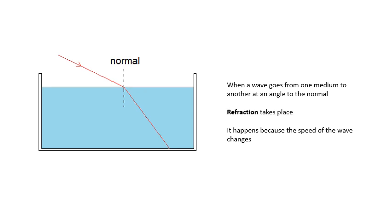Normal means at right angles. So this ray of light on this diagram is coming in at an angle to the normal. The angle to the normal is this angle here. That's the one that we're interested in. And what happens is it changes direction.